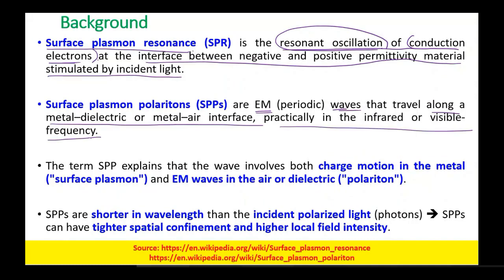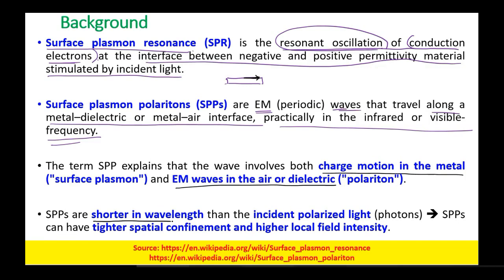The electromagnetic waves which have been generated move along the surface of the gold layer. Those electromagnetic waves are regarded as the surface plasmon polaritons or SPPs. The term SPPs explains that the wave involves both charge motion in the metal surface plasma and EM waves in air or dielectric — so both movement of charge and electromagnetic waves.